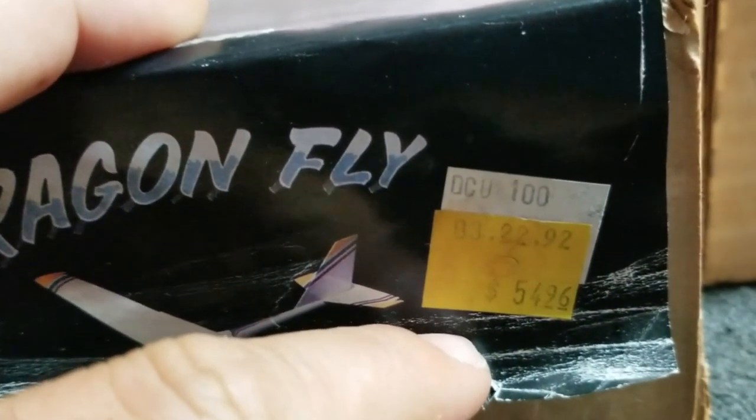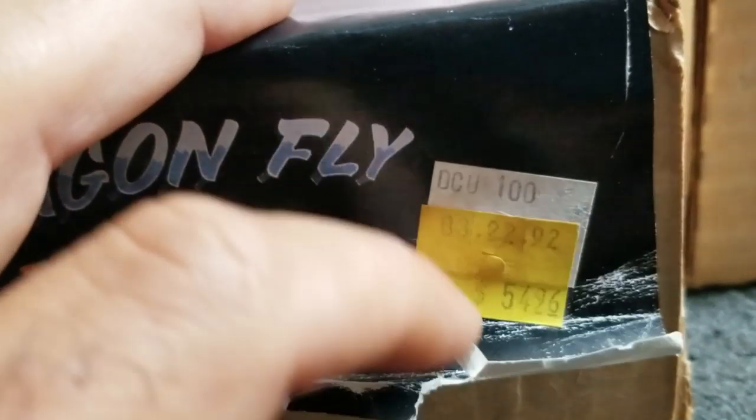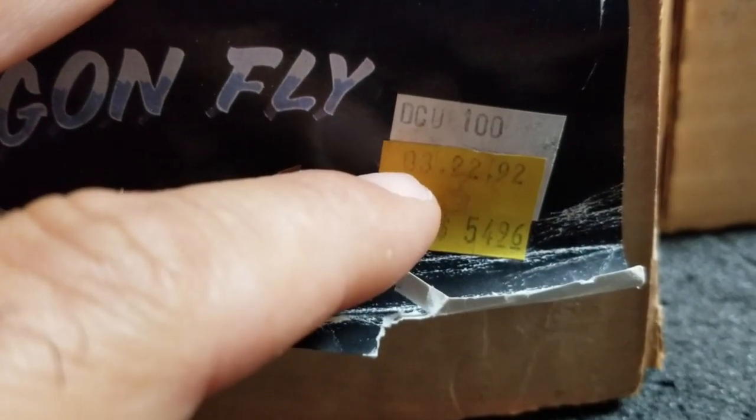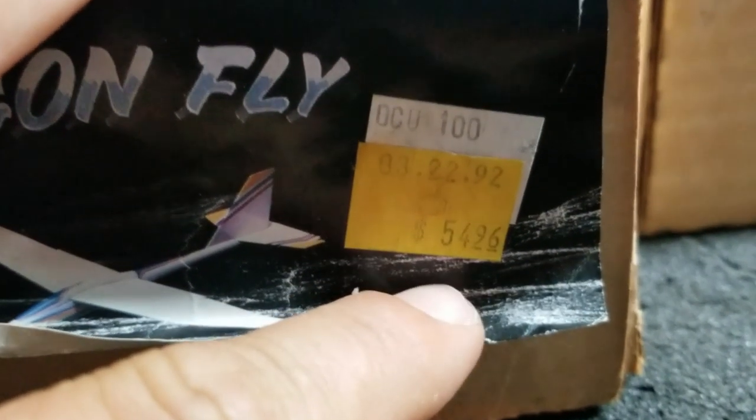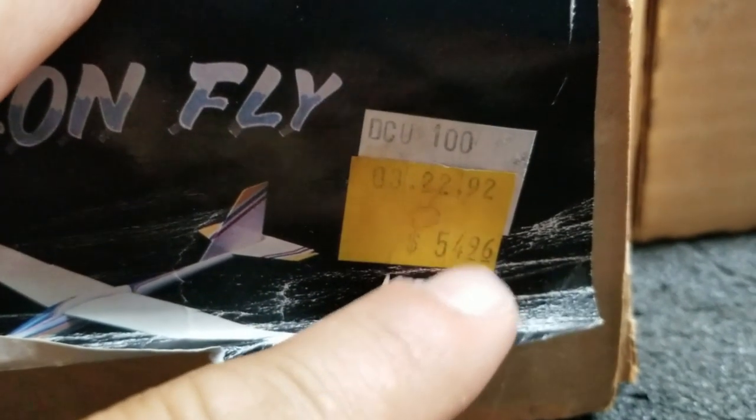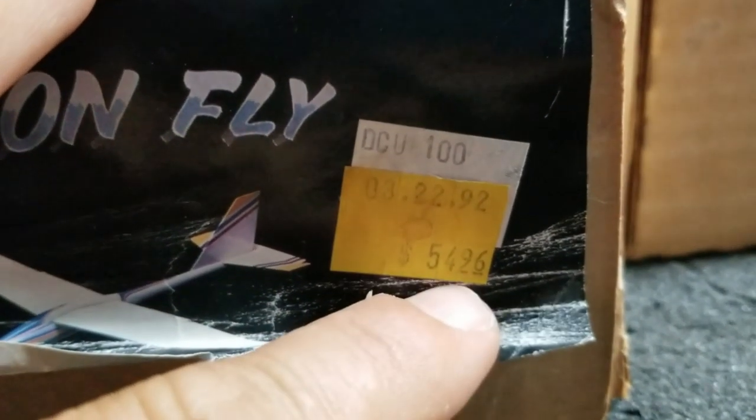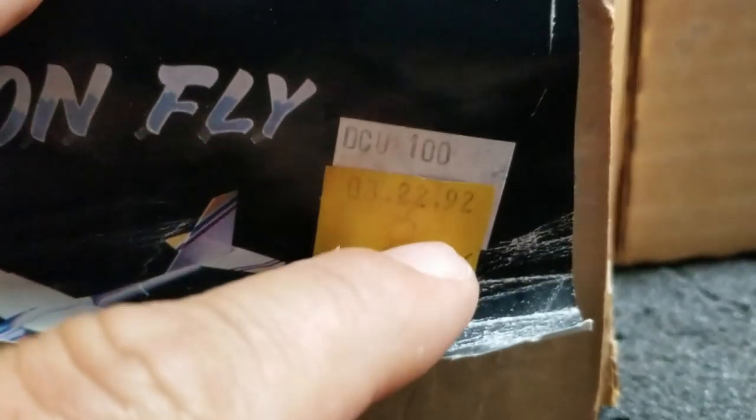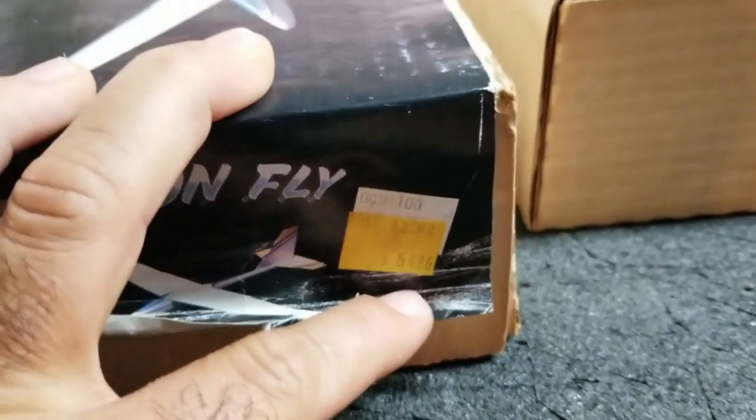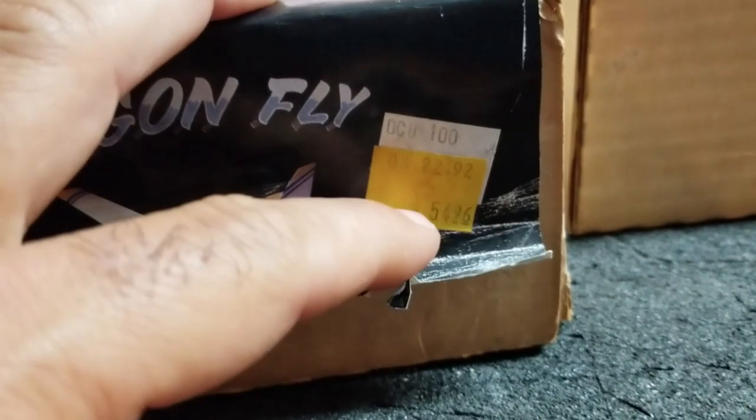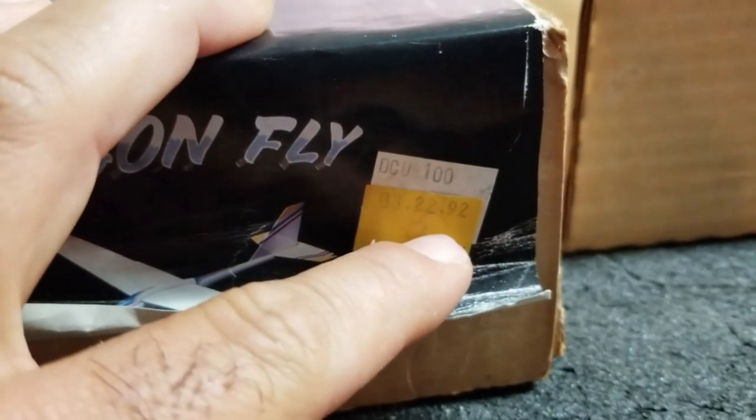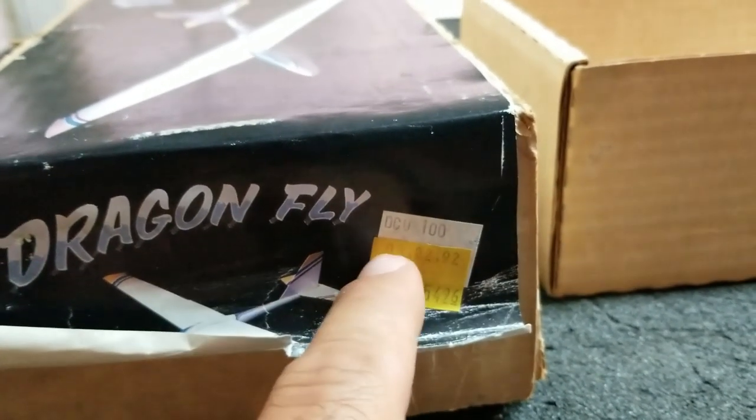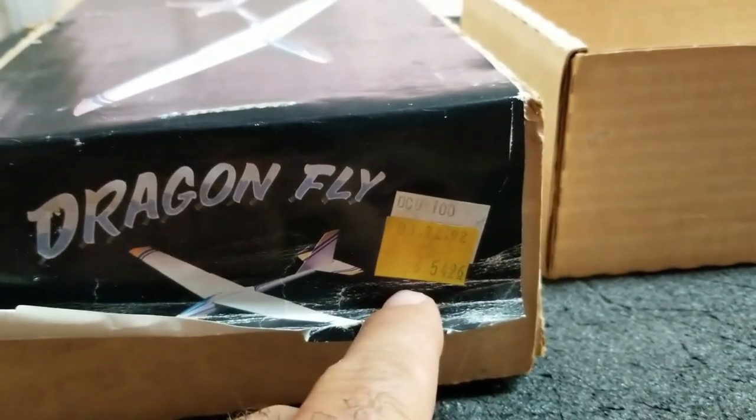I just noticed this price tag on the kit. I guess this must be the original price tag. It's $19.92. So I think that's March 22nd, 1992, and it says $54.96. So not as cheap as I remembered. But I don't know what that would be with inflation. This might be like a $200 or $150 kit now if someone was making it. But it's kind of cool that the old tag is on there still. So 1992 was what, almost 30 years, 27 years or something like that when this kit was purchased.